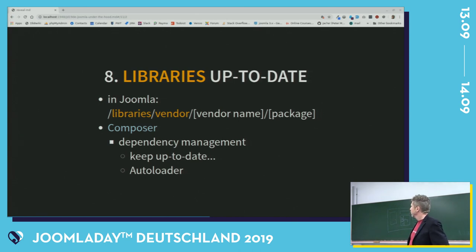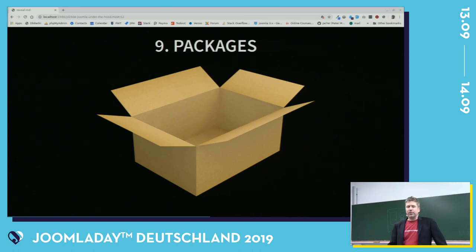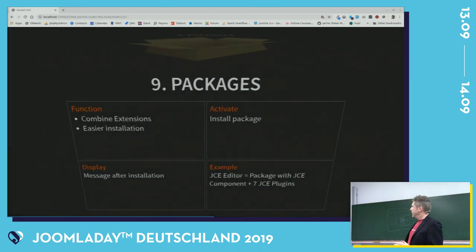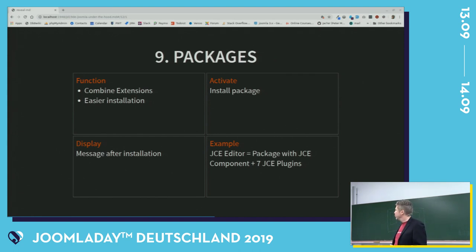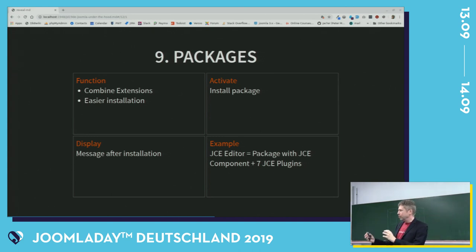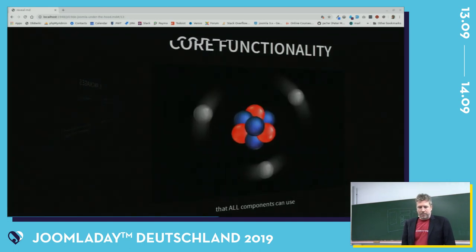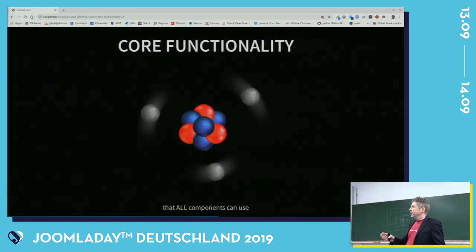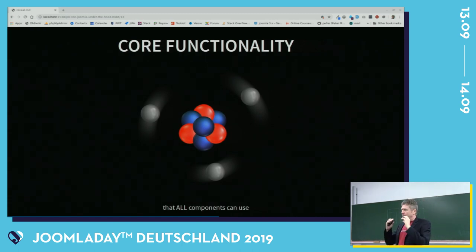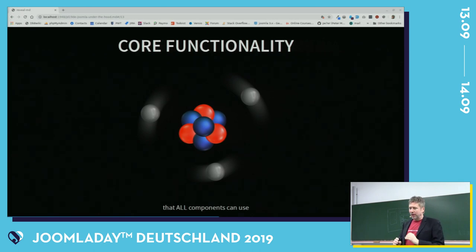Packages: if you have an extension that has multiple packages — like a component, a couple of modules, maybe a plugin — it's possible to create packages. With packages, it's easier for end users to install your stuff. Otherwise, maybe they have to install five different zip files. Now they just have one package which includes all those five zip files. So that was basically an overview of Joomla extensions. Now I would like to discuss some of the core functionality that Joomla has, that all components can use.